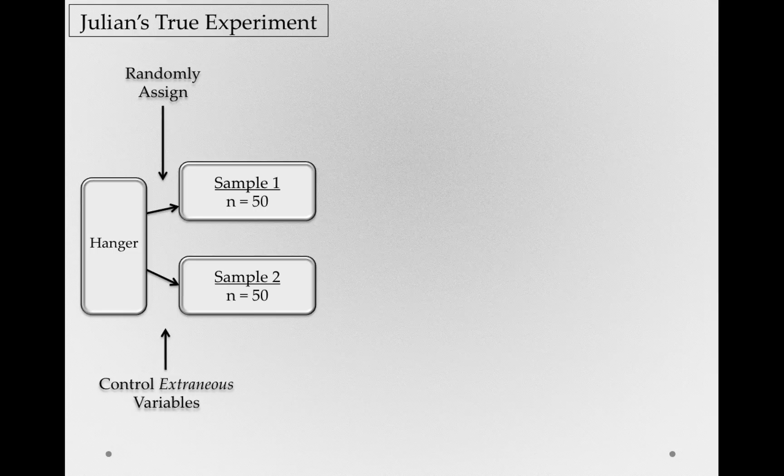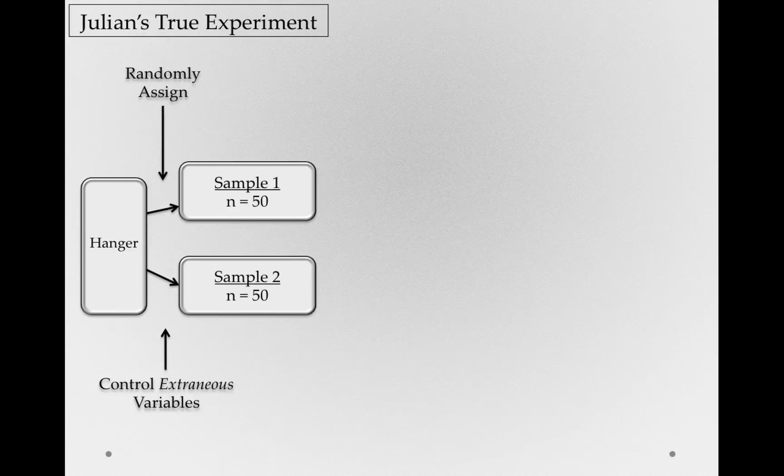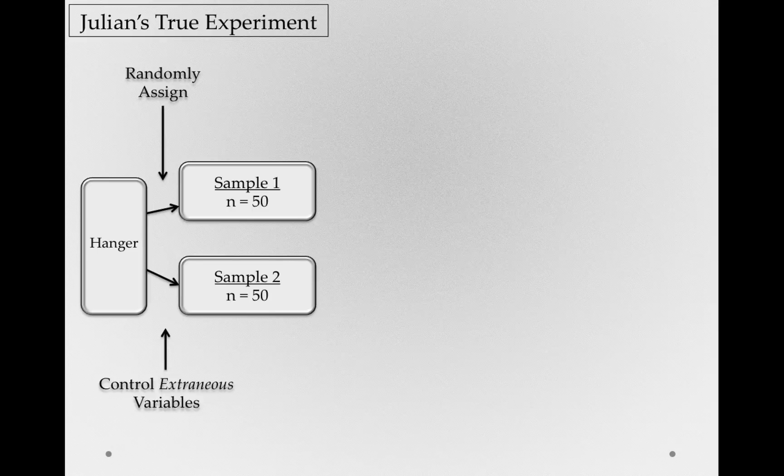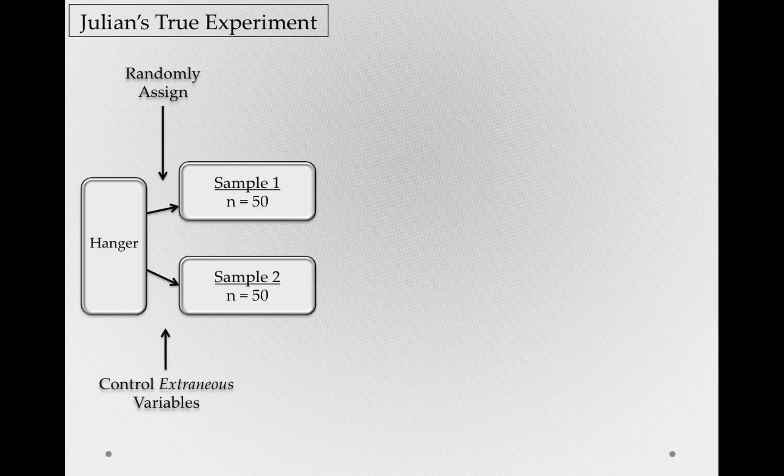Here, I'm going to be controlling extraneous variables because notice, sample 1 and sample 2 will, on average, have planes about the same in terms of engine size, about the same in terms of wingspan, or anything else that we might be able to think about relates to top speed. Now that I've randomly assigned these 100 planes to two different samples, I'm going to manipulate the independent variable.